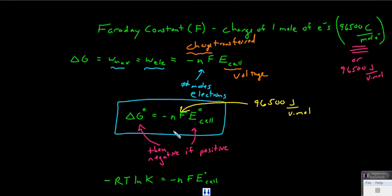You'll note that in this equation, if you have a positive E cell and you multiply by this negative, you get a negative delta G, which should make sense. We've said that having positive E cells means that we have a spontaneous process, and we know that a negative delta G standard is also spontaneous.